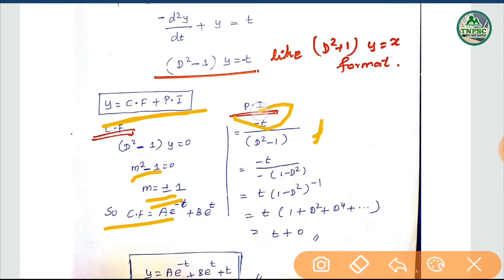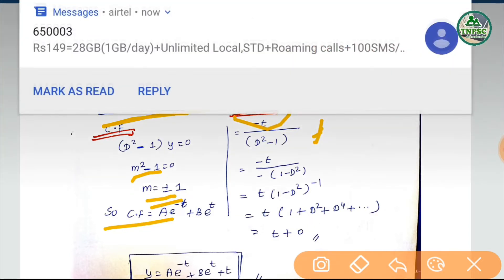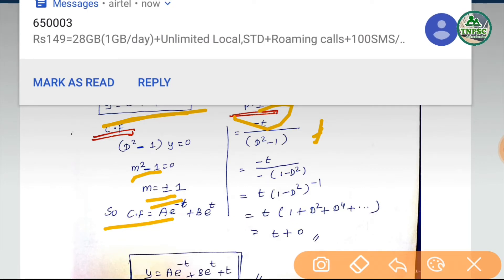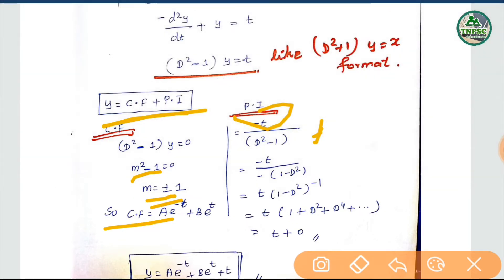We can see it divided by d-squared minus 1. That gives minus t divided by minus 1. So we apply 1 minus D-squared in the denominator, expanding as 1 divided by 1 minus D-squared, which equals 1 plus D-squared plus D-power-4, using the series expansion.